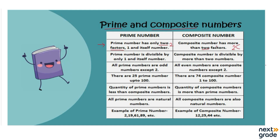Three, four, five, seven, eight, nine, ten. The next comparison is that a prime number is a number which can be divisible by only one number or by itself. Composite numbers are divisible by more than two numbers.